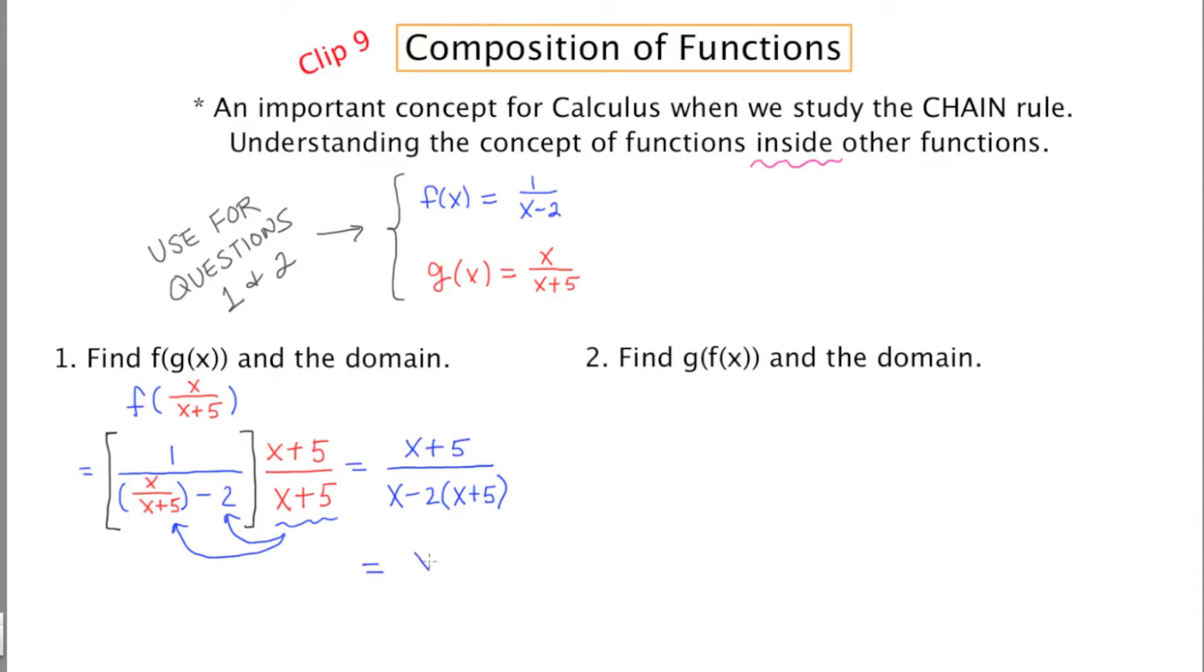So now we have x plus 5 on top, and then downstairs, we're going to have x minus 2x, which would be negative x minus 10. So this is the composition of functions f of g of x.